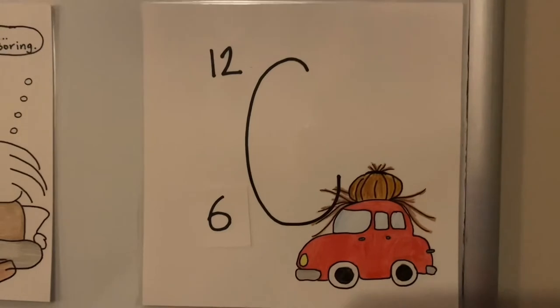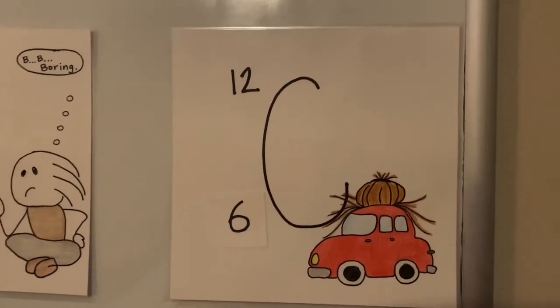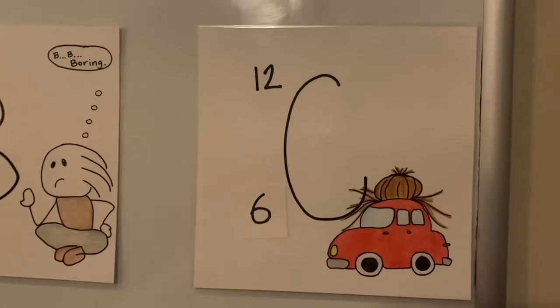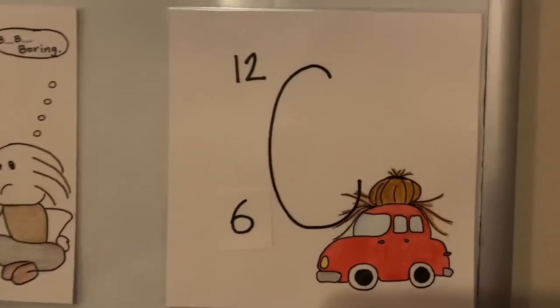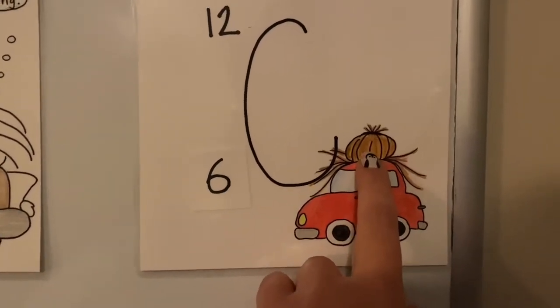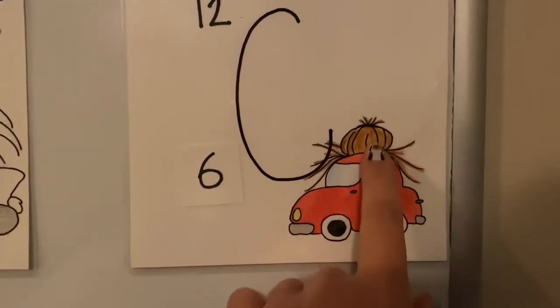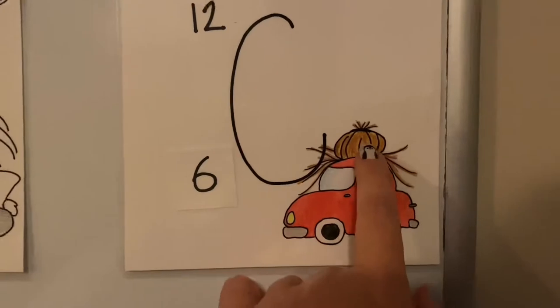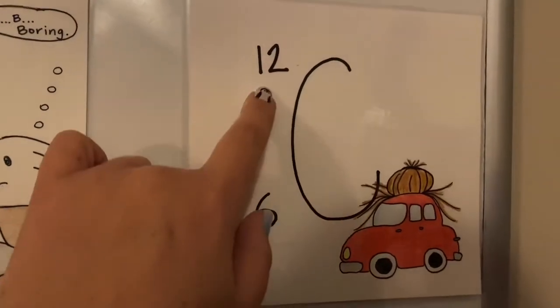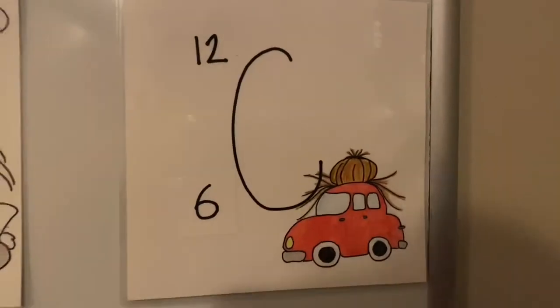This might be my favorite. This one, C, stands for carbon. And if you see, I have a picture of a car wearing a bun. Car-bun. Get it? Car-bun. Ha-ha-ha. And the atomic number is 6 times 2 is 12. Car-bun.